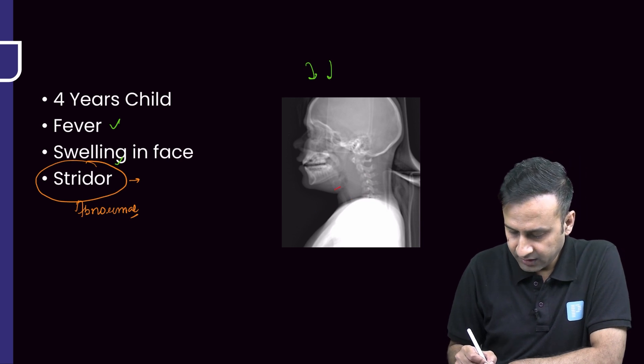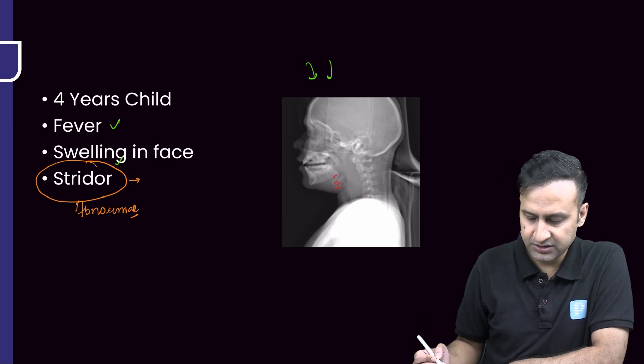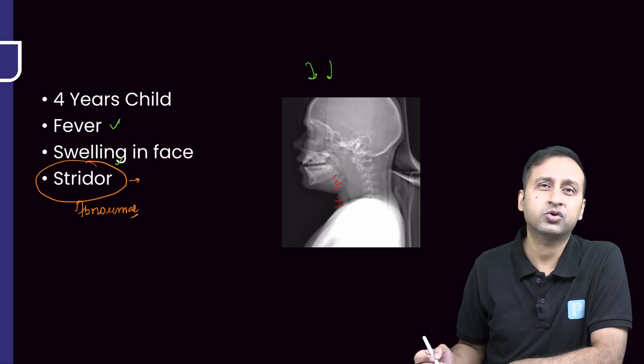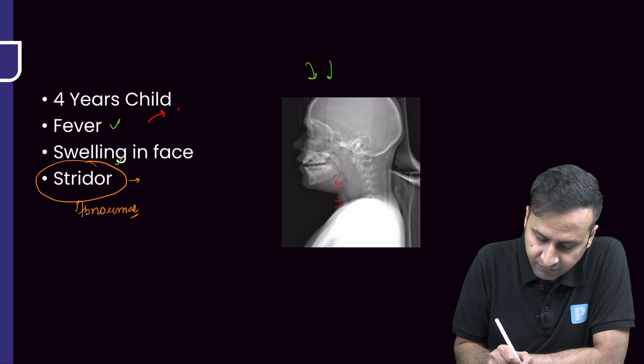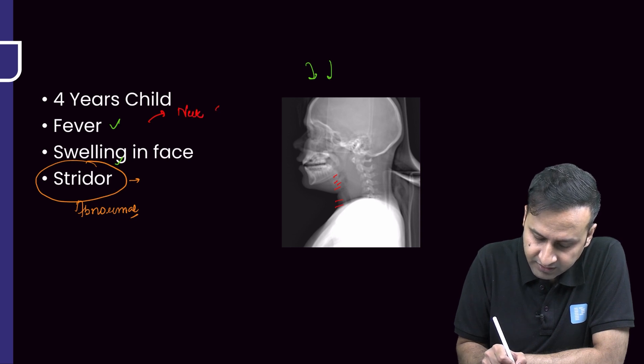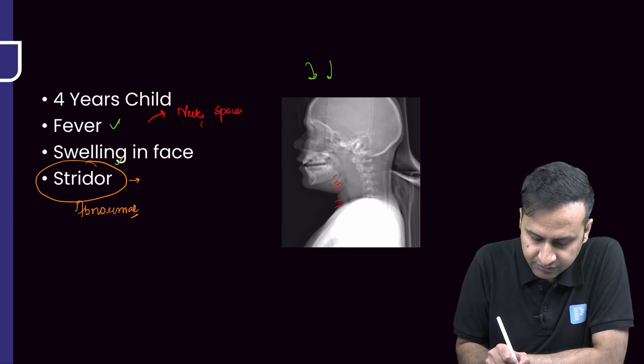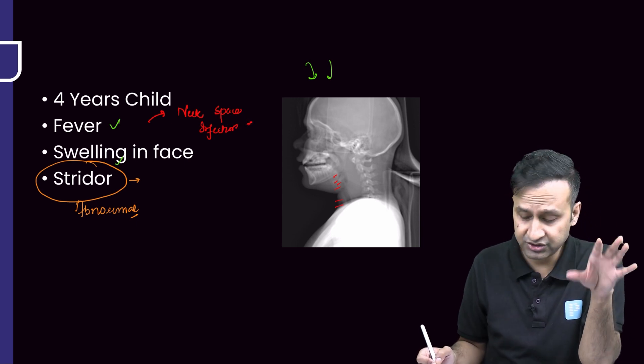Due to all this, what has happened to our airway? The airway appears to have been compressed, specifically in this region, in the subglottic region. It looks almost okay, so it means we're dealing with some form of a neck space infection.